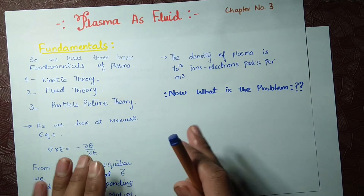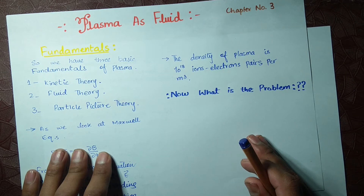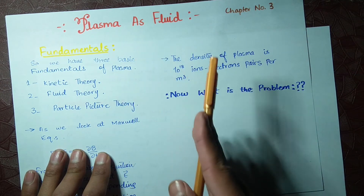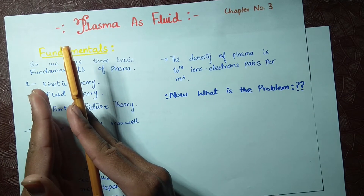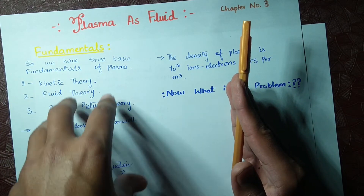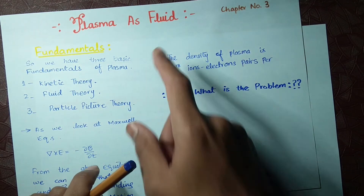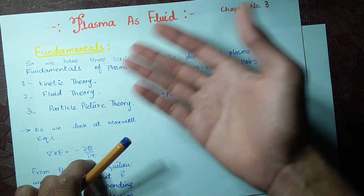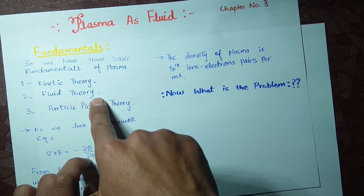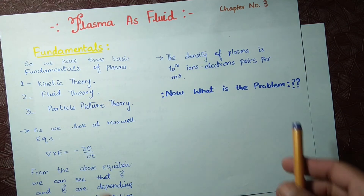Let's talk about the fundamentals first — some basic terms of plasma. How can we study plasma? What are the theories we can follow? Plasma phenomena and the behavior of plasma can be understood by different theories. We have mainly three different theories of plasma: the first is kinetic theory, the second is fluid theory, and the third is particle picture theory.